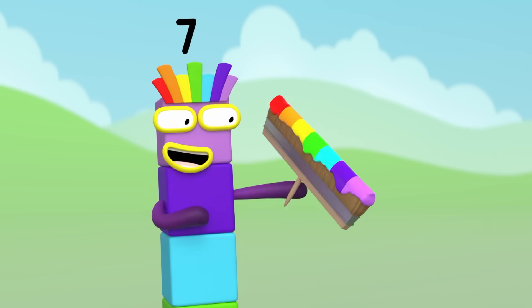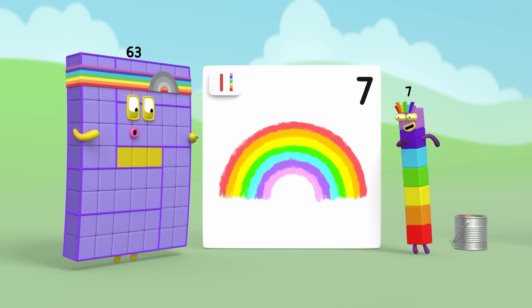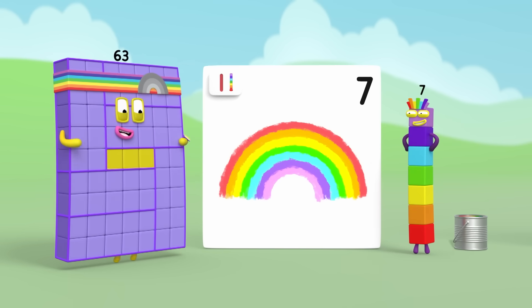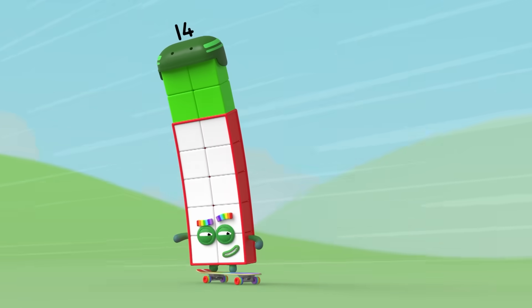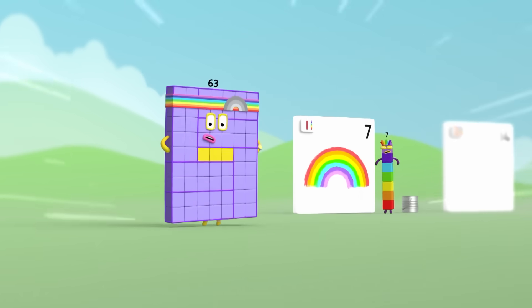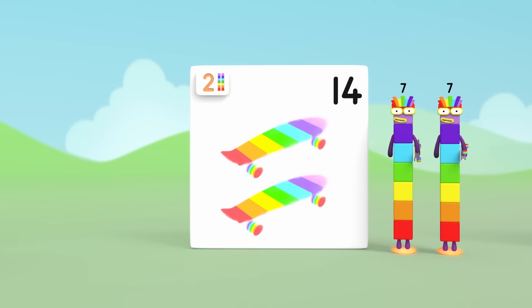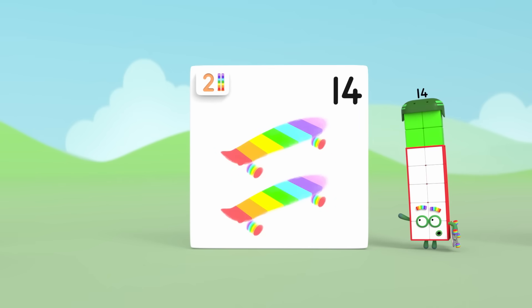One brush, seven colors. One seven, one rainbow. Gangway, extreme 14 coming through. Two sevens, two rainbows. Awesome.